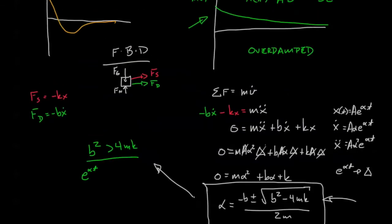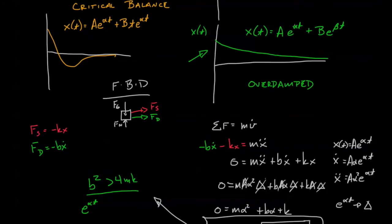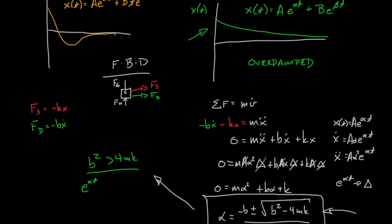So in our overdamped solution take a look. We have e^(αt) plus Be^(βt). Now does that make sense? Overdamped is where the damping is really really significant.